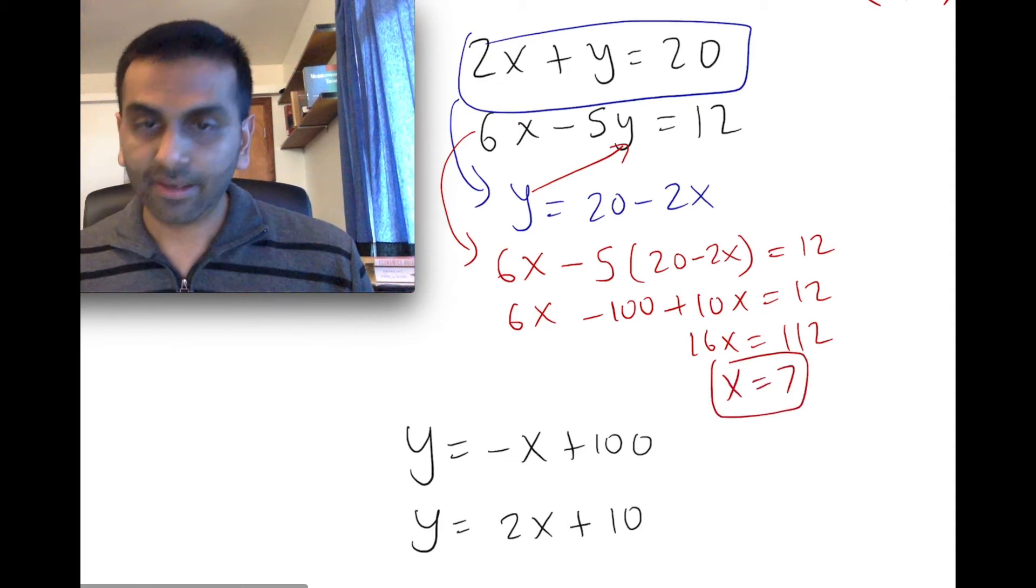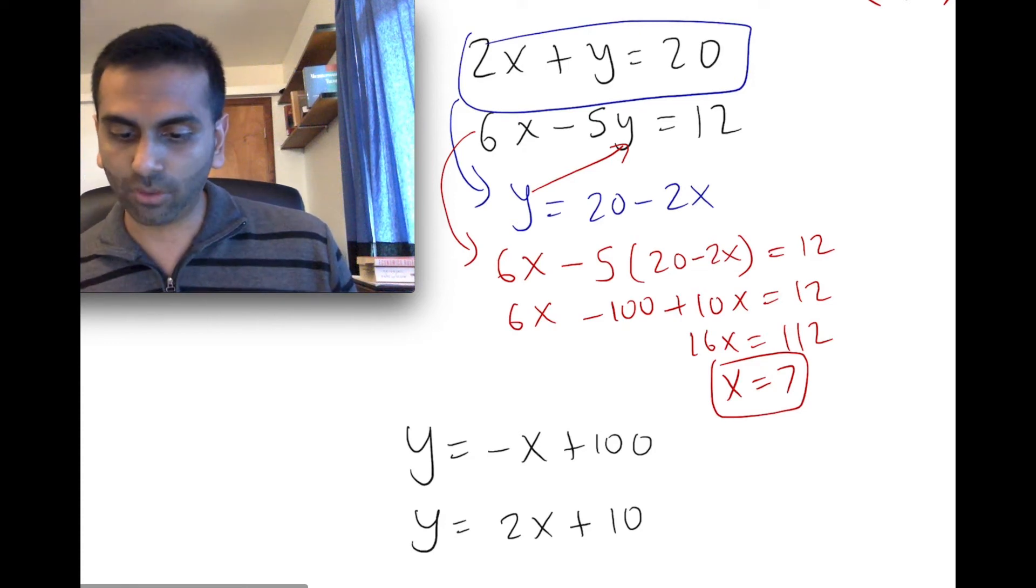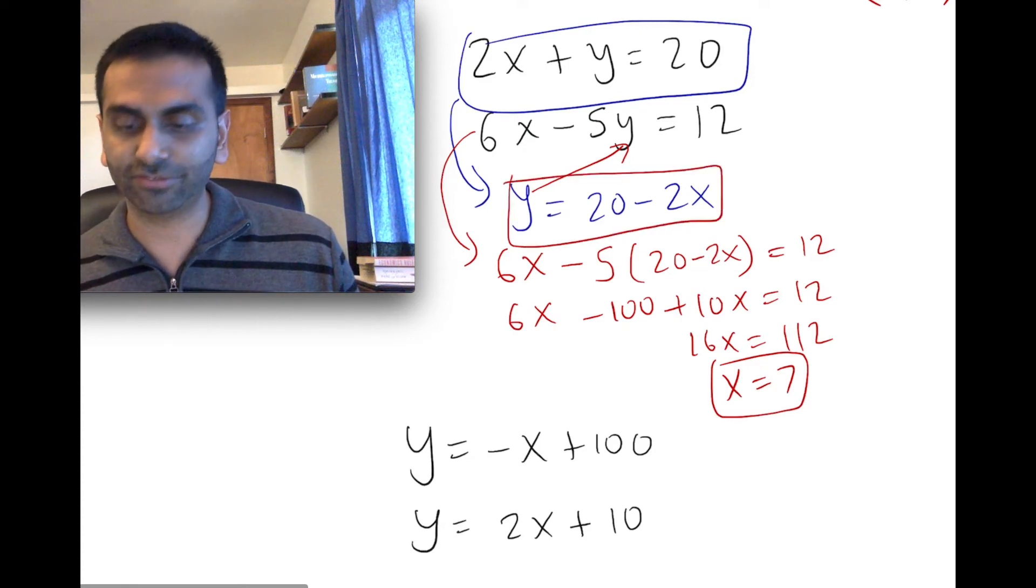Alright. And then you can solve for y, again, by going back to this equation that you had solved for, and replacing x now. So y is 20 - 2x, right?